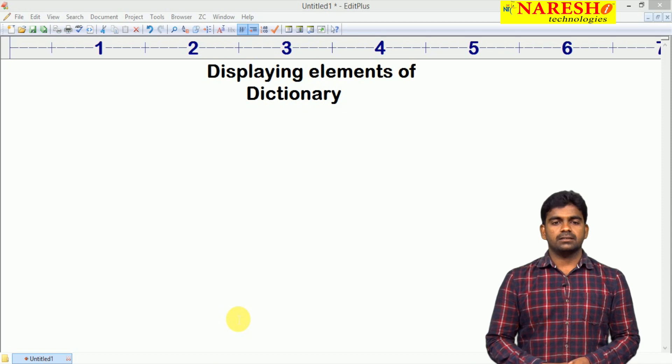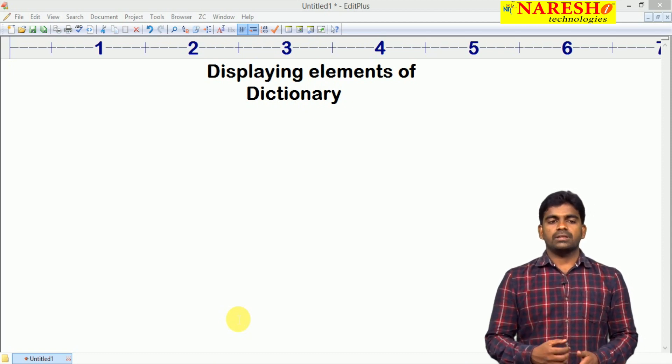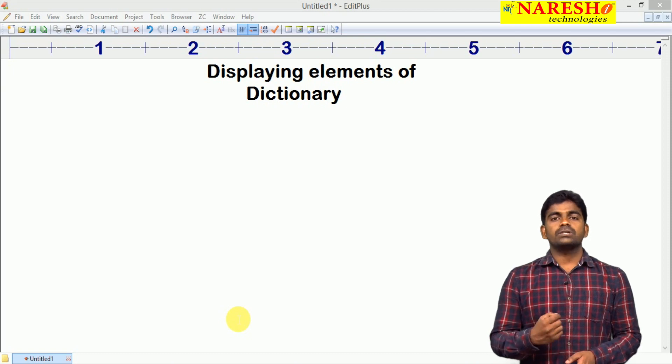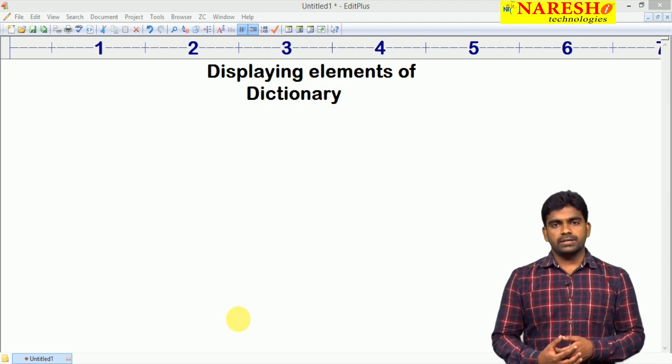In the last video I explained the immutability and mutability of dictionary. Now in this video we will discuss how to display elements of dictionary using the predefined functionality and using loops.